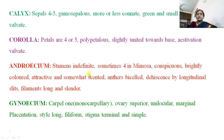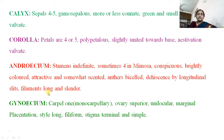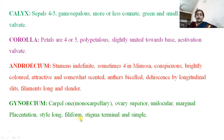Androecium: stamens are infinite in number, and sometimes four in Mimosa. They are conspicuous and brightly colored — this is a very important characteristic feature. The stamens are attractive and somewhat scented. Anthers are bilobed, dehiscing by longitudinal slit, filaments long and slender. Gynoecium: carpel is monocarpellary, ovary superior, unilocular with marginal placentation. Style is long and filiform, stigma terminal and simple.